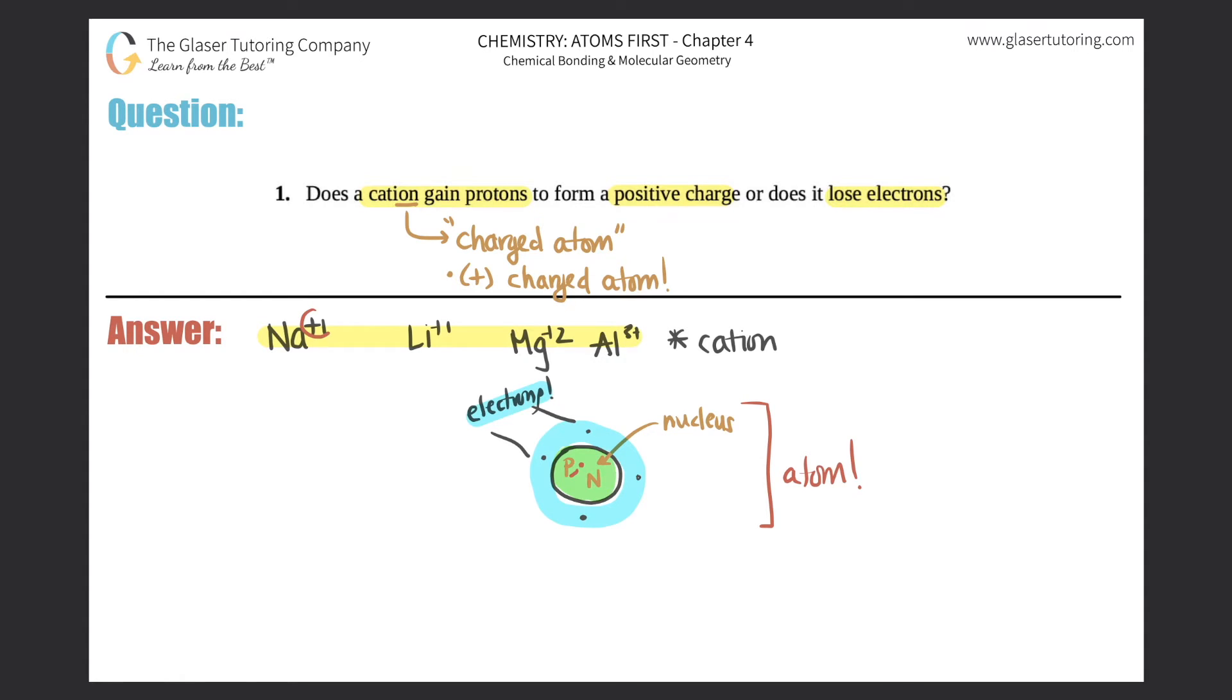So a plus one means that your overall charge is a plus one, which means that you should have one more proton than electron. So the plus really means that you lost electrons. So in this case, a plus one signifies that you lost one electron.